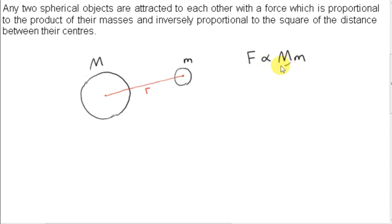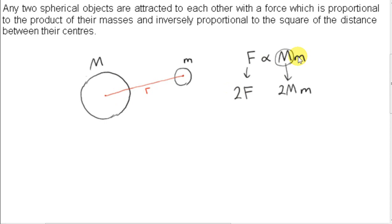If we replace big M with a mass that's twice as big — two times big M — then we double the force. Or if we replace little m with a mass that's twice as big, two times little m, then we also double the force. Or if we multiply big M by three, we triple the force. Or if we multiply little m by three, we triple the force, and so on.